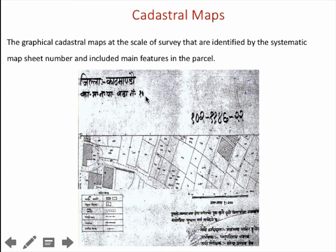This is a cadastral map of Kathmandu district with ward number 10. Its scale is 1:500. In the left-hand corner you can see the legend, which describes how features are represented — permanent structures, temporary houses, and roads.